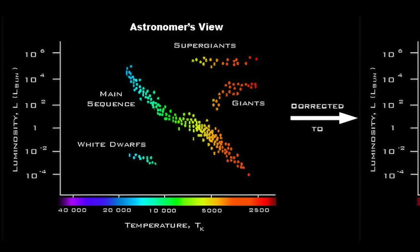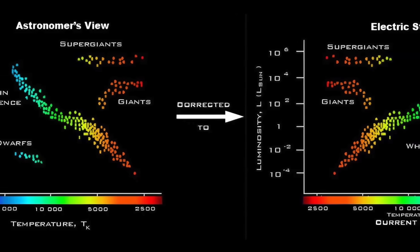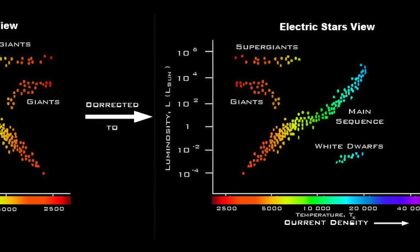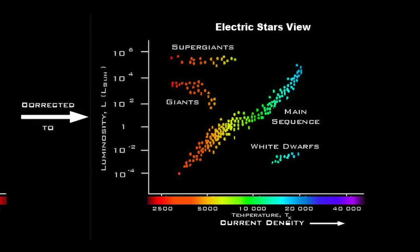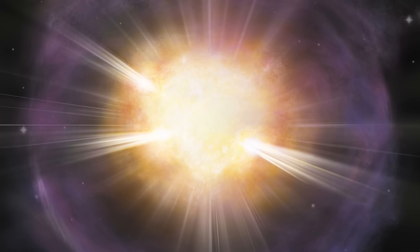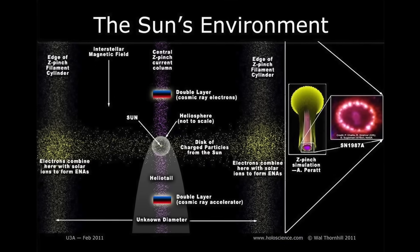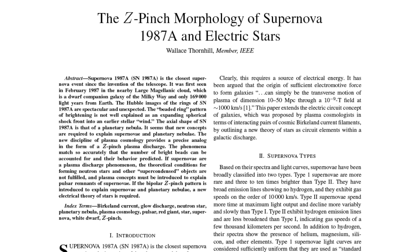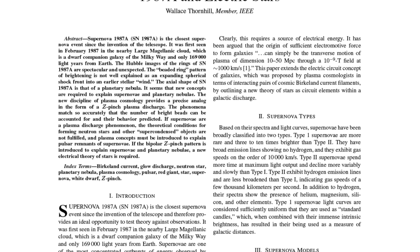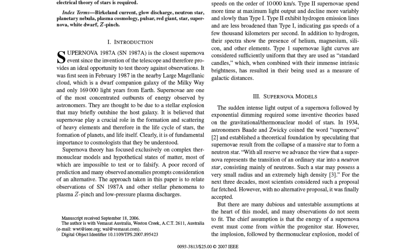The Electric Universe offers an alternative diagram to the standard Hertzsprung-Russell diagram, which explains observable stellar phenomena in terms of electric current density. Critically, in the EU diagram, it is not possible to tell the age of a star. Supernovas are not the result of stars running out of nuclear fuel and gravitationally collapsing, but rather they are catastrophic electrical discharges along the electrical circuitry connecting the star to the larger galaxy. Thornhill's peer-reviewed paper, entitled The Z-Pinch Morphology of Supernova 1987A and Electric Stars, was published in IEEE Transactions on Plasma Science in 2007.